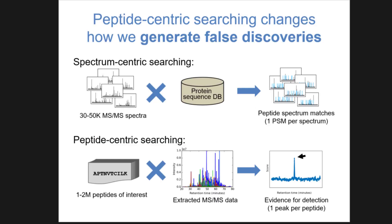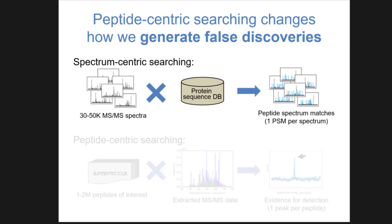So yesterday we talked very briefly about peptide-centric searching versus spectrum-centric searching, and I thought we would recap this a little bit and talk about some more details because I think there was a little bit of confusion and complexity around this. The first thing I thought we would talk about would be spectrum-centric searching and actually go through one of the more common spectrum-centric searching methods for DIA data.